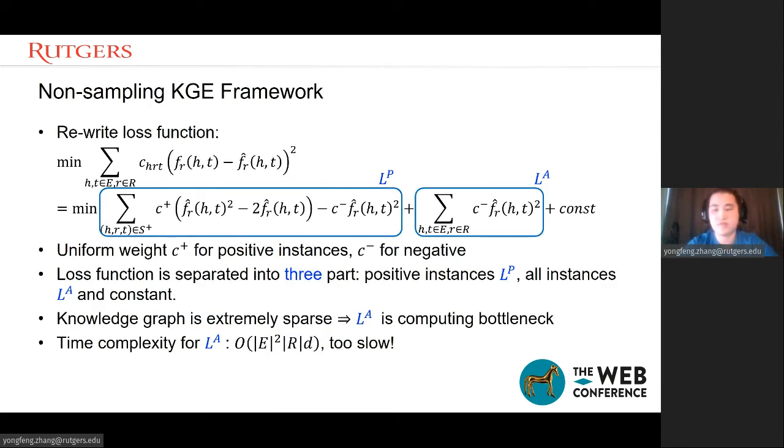Here's the detail of our framework. We first rewrite the square loss function. We just expand the formula and merge them. We can see the formula has three parts: the positive instance part LP, the whole instance part LA, and the remaining part is the constant.